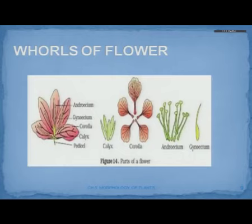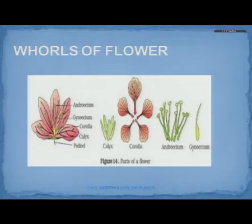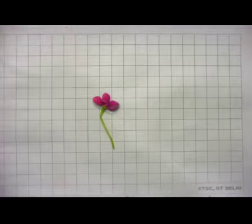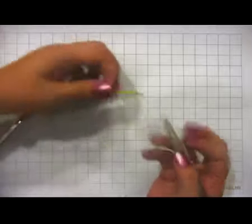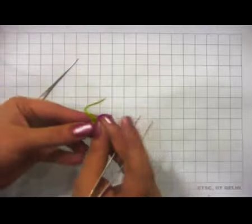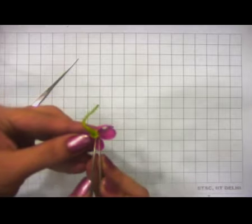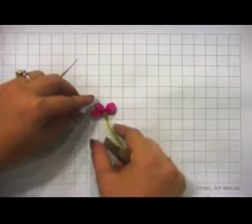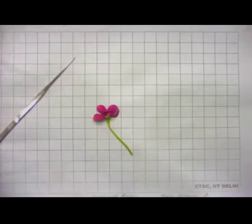Now, the structure of a typical flower. Each flower generally has four whorls: calyx, corolla, androecium, and gynoecium. Rather than just following the figure in the NCERT textbook, let us see for ourselves whether these whorls are really present. This is a typical angiosperm flower. At the base of this flower you can see the sepals — the green structures — which are protective in nature. The sepals form the outermost whorl of the flower, that is the calyx.